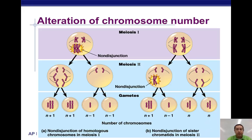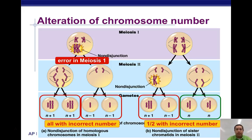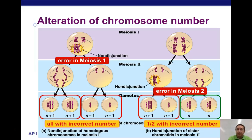It happens in meiosis I versus meiosis II. Here in meiosis I, every chromosome has the incorrect number. In meiosis II, half of the cells have the incorrect number — one of them is going to have an extra copy and one is going to be missing a chromosome.